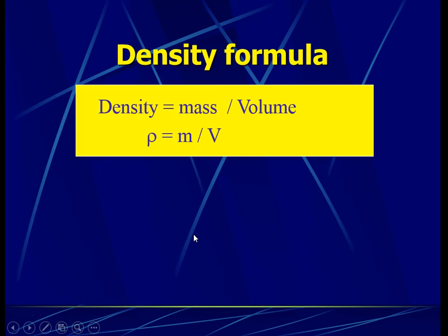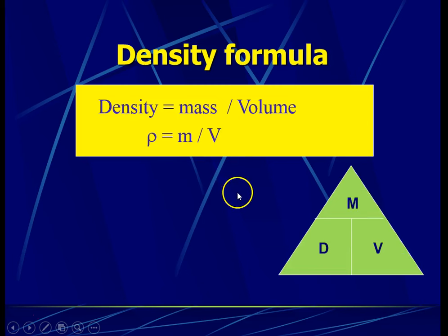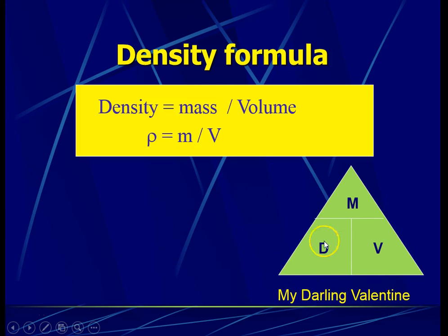To calculate density, we use this formula: density is given by the mass of the substance divided by its volume. In symbolic form, rho equals M divided by capital V. Some of you may want to use the triangle method to represent the formula, where D represents density, M for mass, and V for volume. A mnemonic to remember this relationship is 'my darling valentine.'